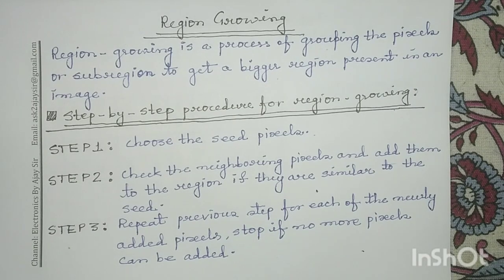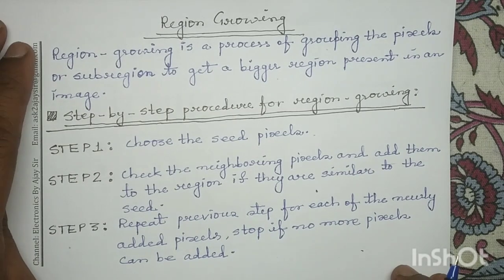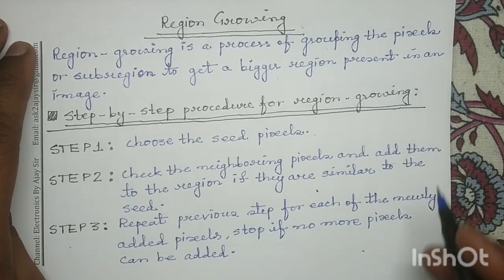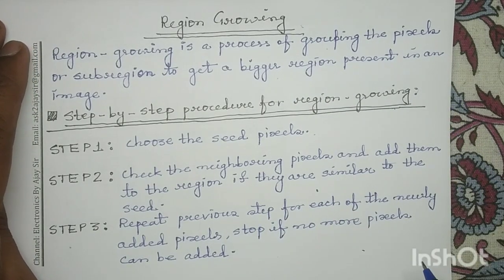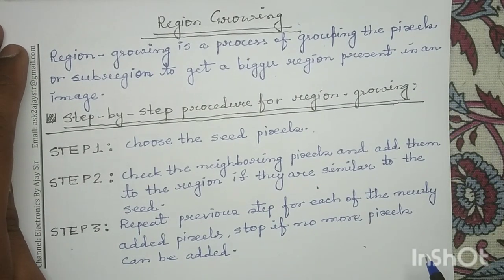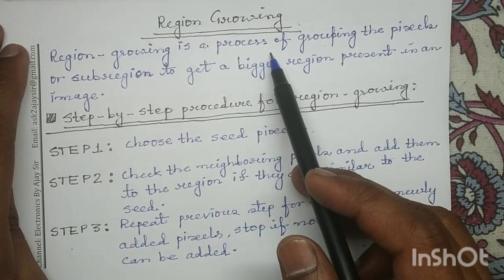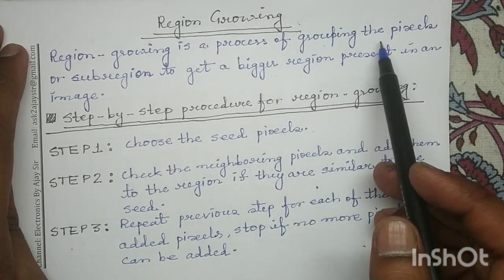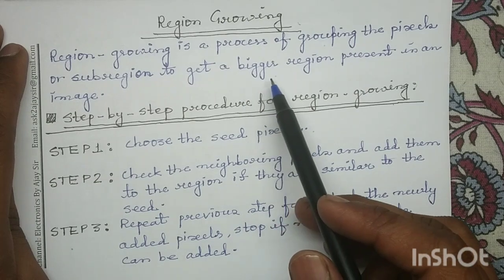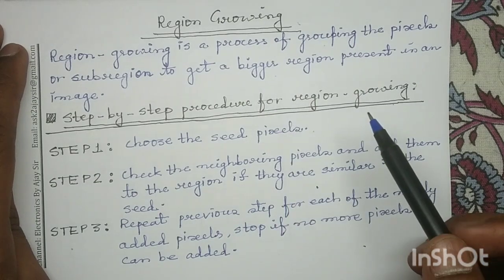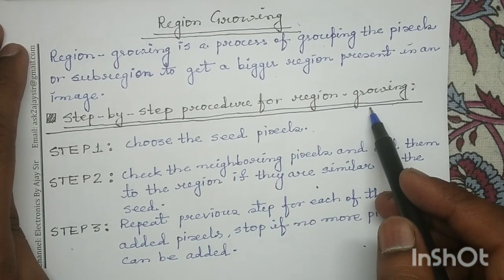Good morning all. Today we will learn another method: region growing. Region growing is very commonly used for image segmentation. It is a process of grouping of pixels or sub-regions in order to get a bigger region. The step-by-step procedure of region growing is as follows.